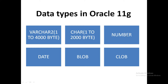The next data type is NUMBER. In this NUMBER data type, you can store integer as well as real values. If you want to store integers, just write NUMBER. If you want to store real values, write NUMBER then in brackets mention the total number of digits, comma, the number of decimal precisions required. So NUMBER can be used for both integers and numerical values.